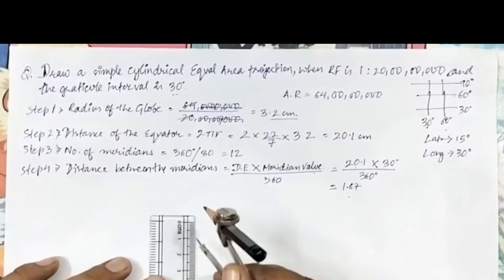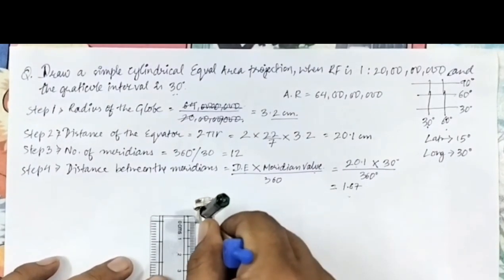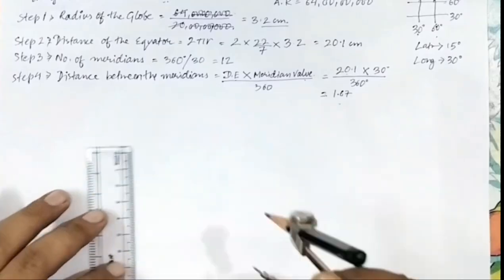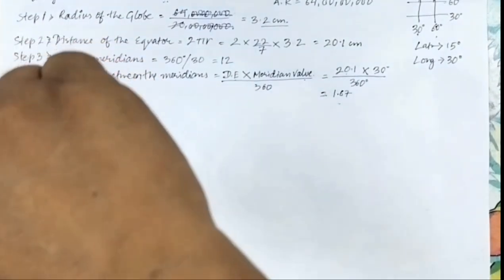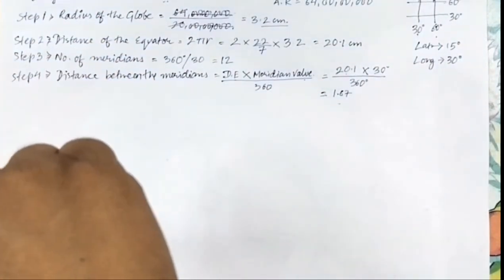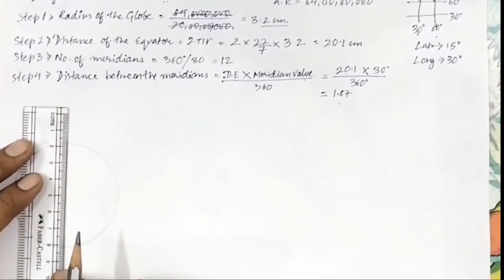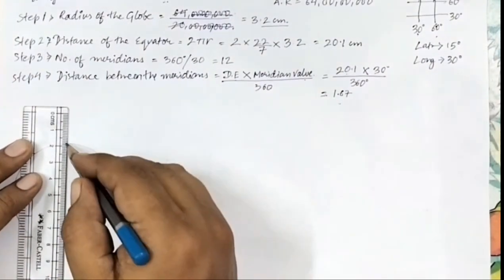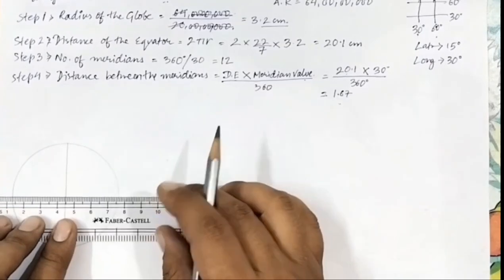We take a distance of 3.2 centimeters — the radius of the globe from step one — and draw a circle. After that, draw the polar diameter and then, taking the center, draw the equatorial diameter as well.